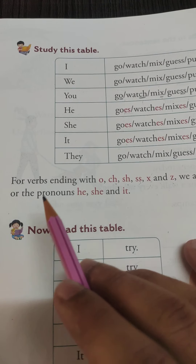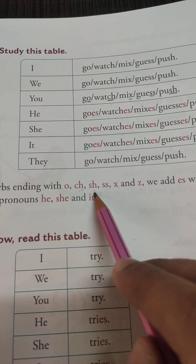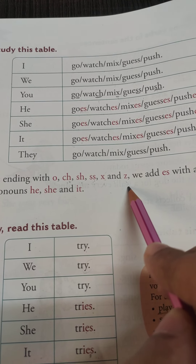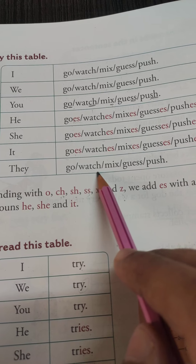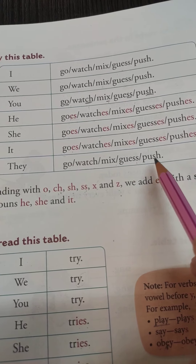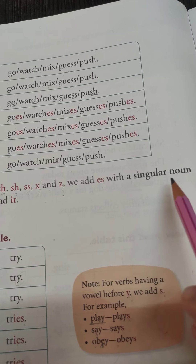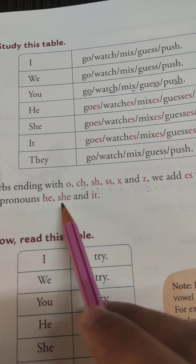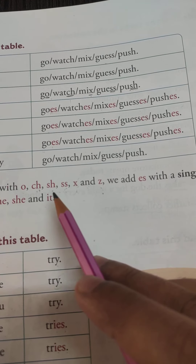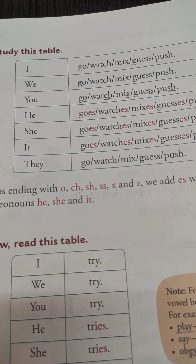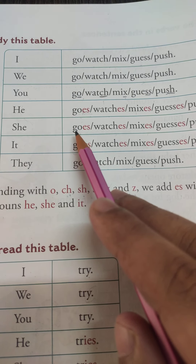In this table what we learned: we add 's' with a singular noun or the pronouns he, she, and it. For example, Aditya goes to school — Aditya is a singular noun so we add 's' to 'go'.